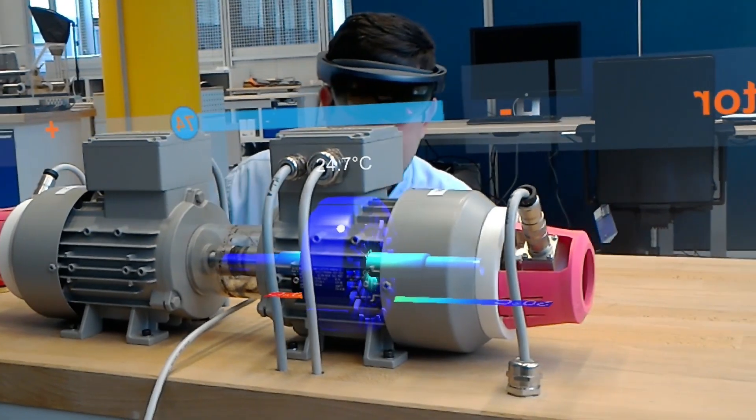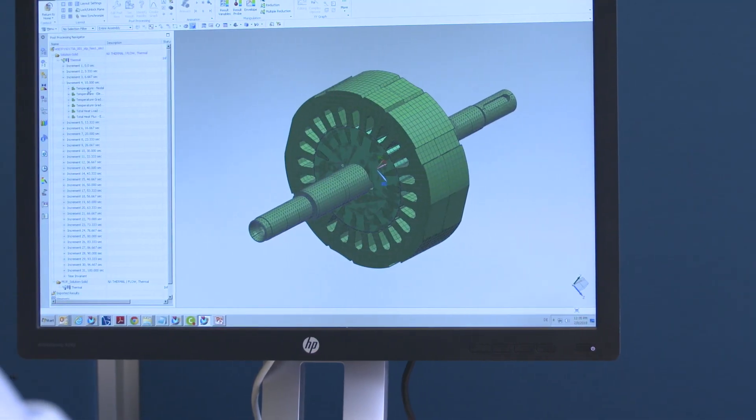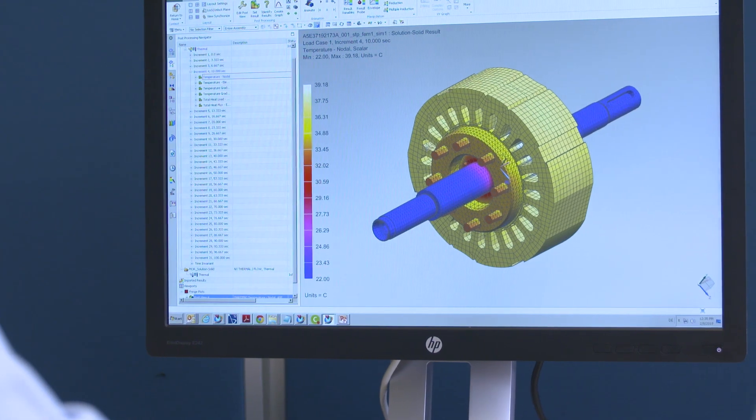So we receive the CAD geometry from our customer. Then we use this geometry to perform some thermal simulations. Based on these simulations, we applied cutting-edge mathematical algorithms to reduce the 3D model.